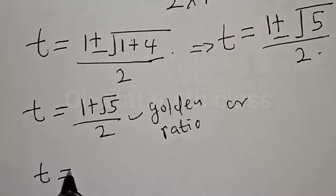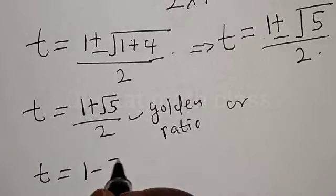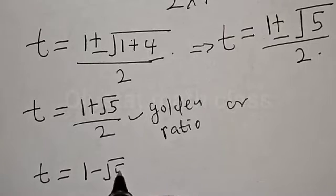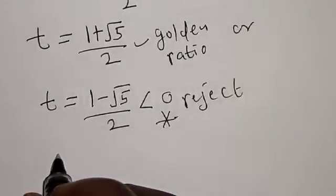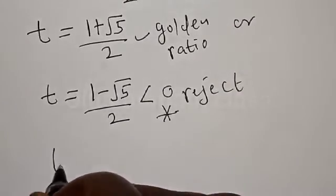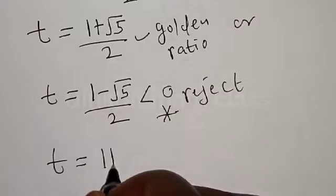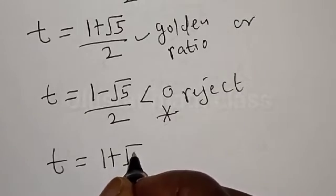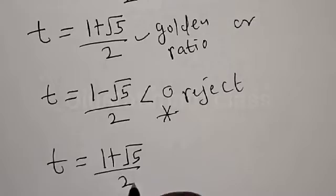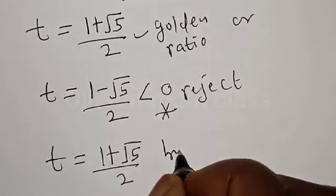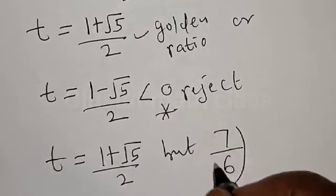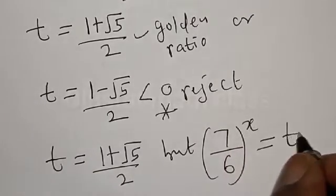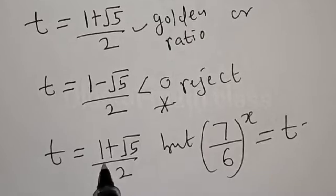t is equal to 1 minus square root of 5 divided by 2. This is less than zero, so we reject it. The only true value of t is t is equal to 1 plus square root of 5 divided by 2. But we said 7 divided by 6, raised to power s, is equal to t.